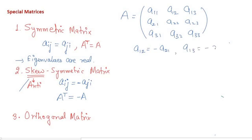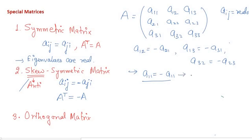Also, a13 = −a31 and a32 = −a23. Now think about what happens to diagonal elements a11, a22, a33. We need a11 = −a11. Since all elements are real, this equation holds only when a11 = 0. Therefore all diagonal elements a11, a22, a33 must equal zero. So a skew-symmetric matrix always has all its diagonal elements equal to zero.